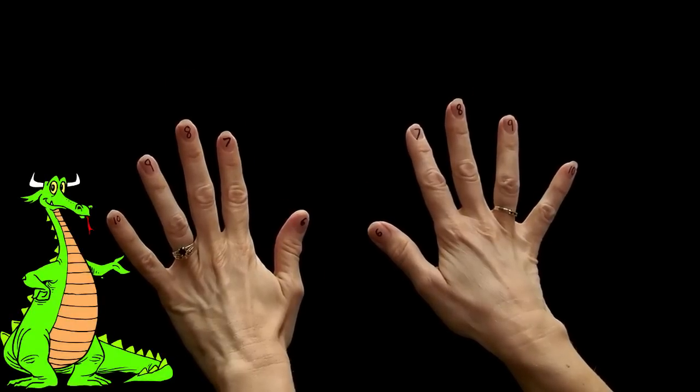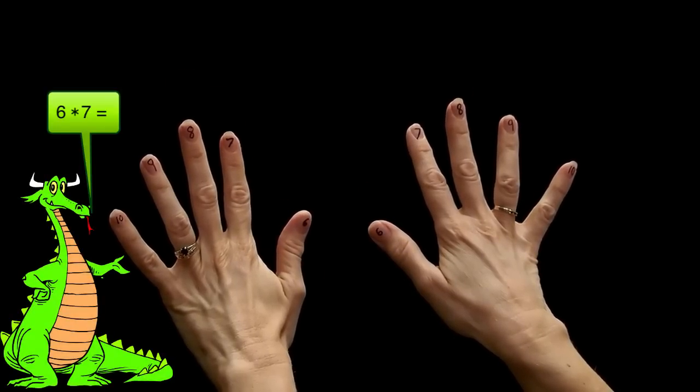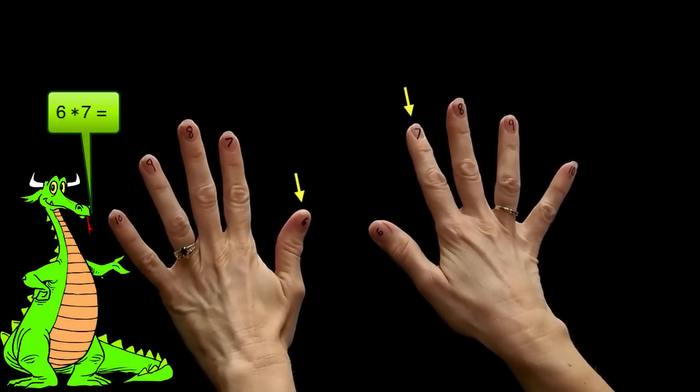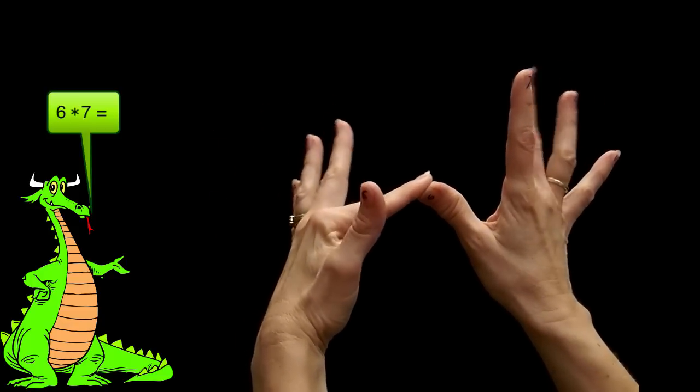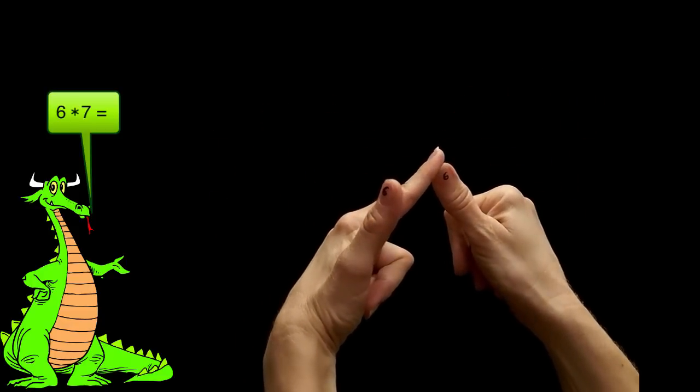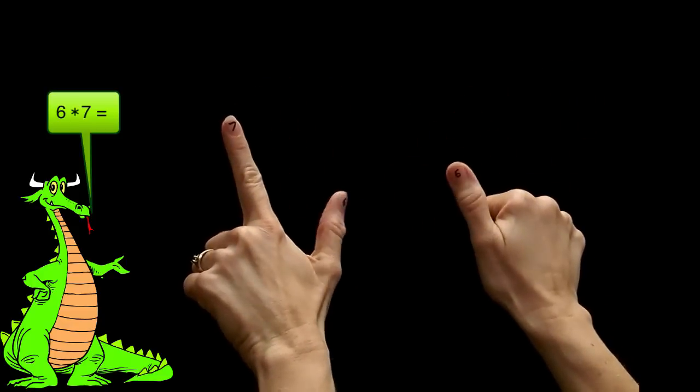For my last example I'm going to try 6 times 7. Find the 6 finger on one hand and the 7 on the other and touch them together. Curl down my fingers to the pinkies. I have 3 on top. That's 30.